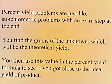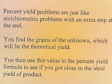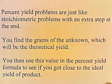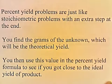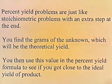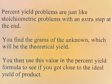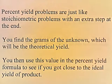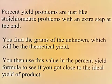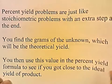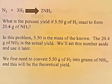Percent yield problems are just like stoichiometric problems with an extra step at the end. You find the grams of the unknown, which will be the theoretical yield, and then you use this value in the percent yield formula to see if you got close to the ideal yield of product.